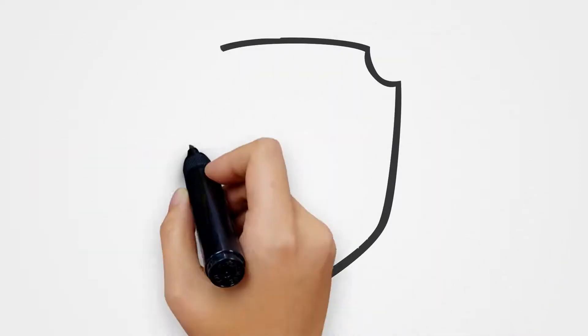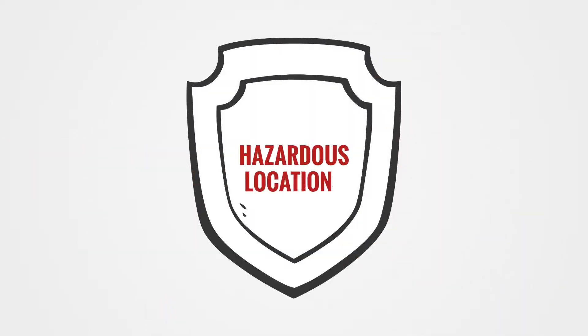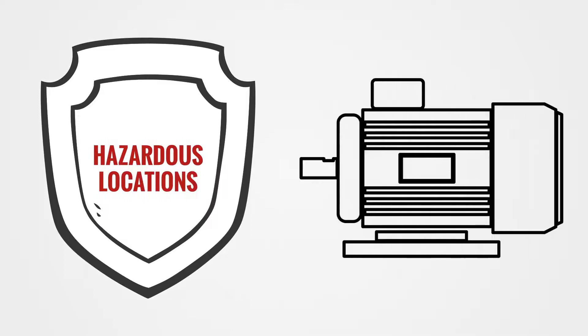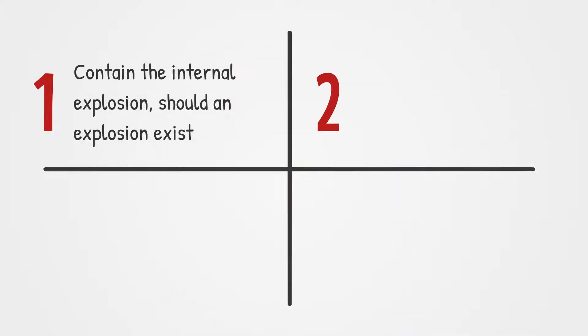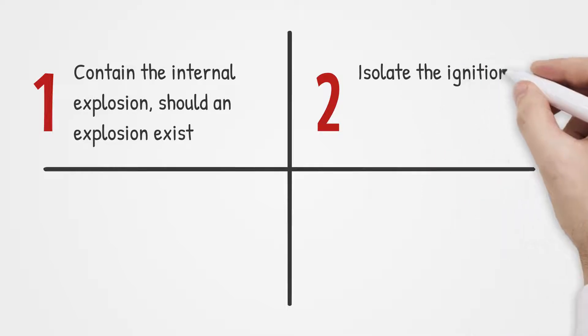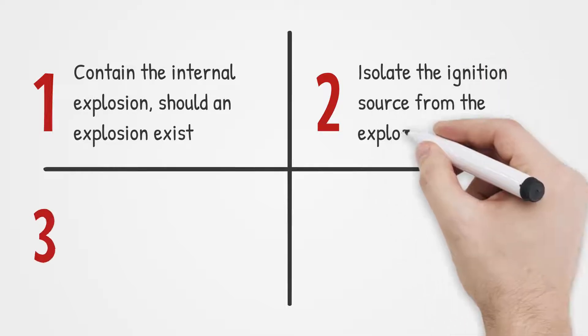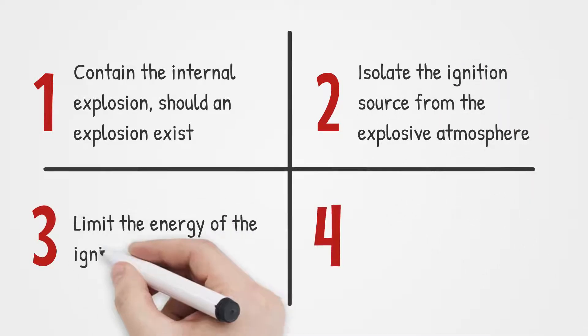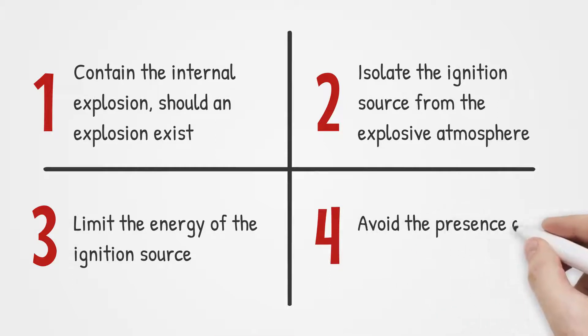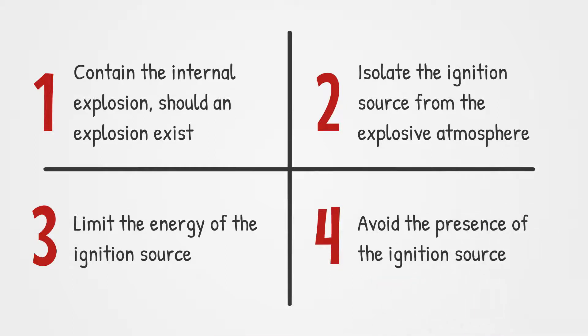Electrical equipment installed in hazardous locations must therefore be protected so explosions are prevented. Four methods are commonly used, sometimes in combination: contain the internal explosion should an explosion exist; isolate the ignition source from the explosive atmosphere; limit the energy of the ignition source; and avoid the presence of the ignition source.